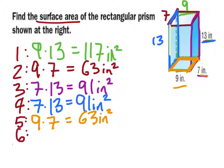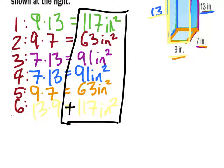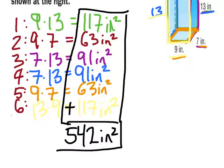Finally, we come to the front surface, which is 13 by 9, giving us another 117 square inches. Adding all these together: 117 + 63 + 91 + 91 + 63 + 117 = 542 square inches. That is our total surface area, and we're done.